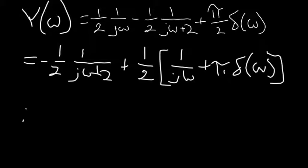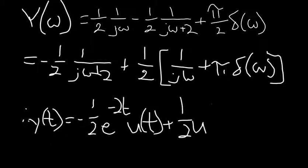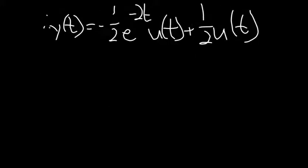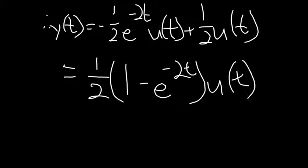Therefore, using the property previously given, we end up with y(t) equals minus 1 half times e to the negative 2t times u(t) plus 1 half times u(t), which simplifies to 1 half times the quantity 1 minus e to the minus 2t, times u(t).